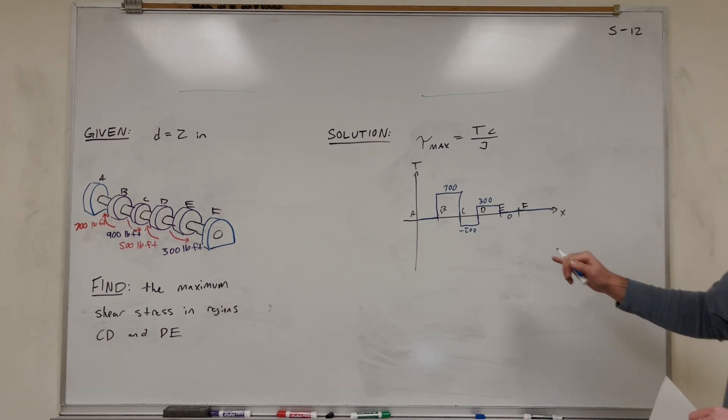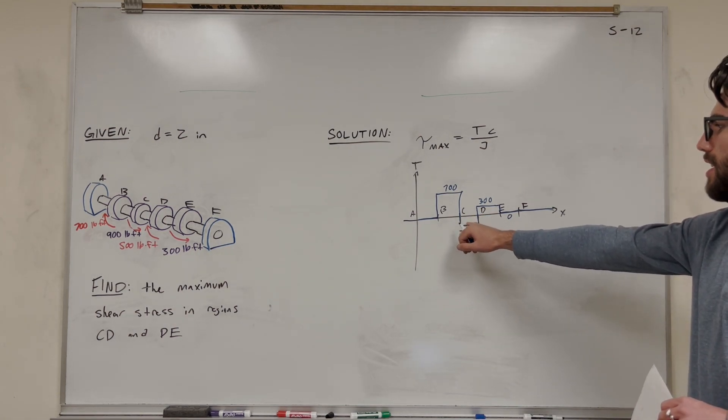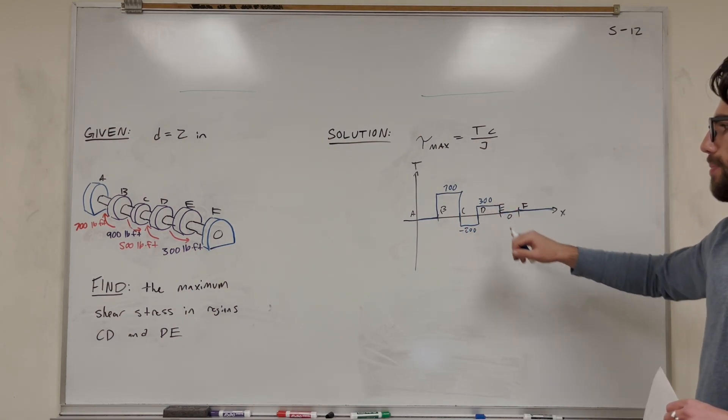So now we're looking at this. And now we know what the stress is in region CD. CD is negative 200, and DE is positive 300.